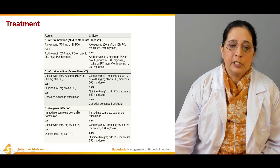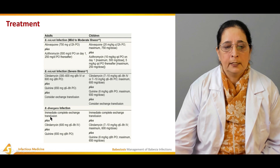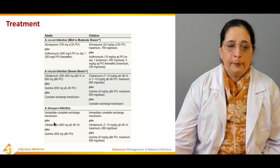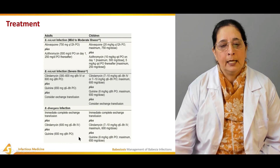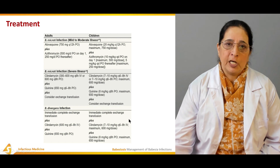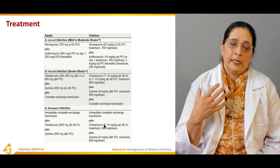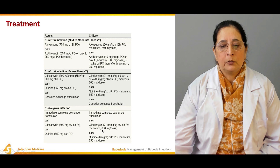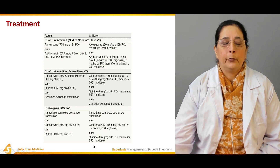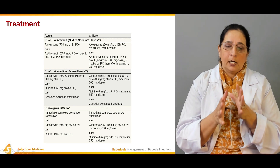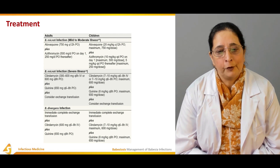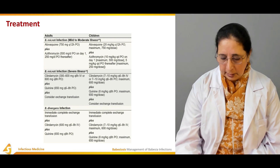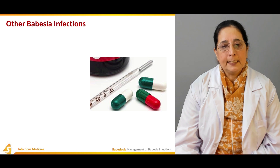For Babesia divergens infection in adults, immediate complete exchange transfusion should be performed, plus clindamycin and quinine. Exchange transfusion is indicated because of the destruction and lysis of red blood cells. The same drugs are used for children, though dosages may differ for adults.